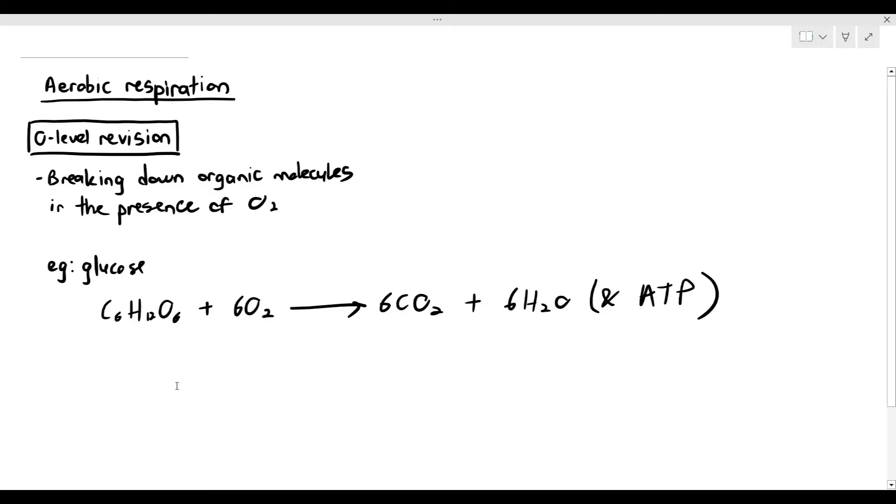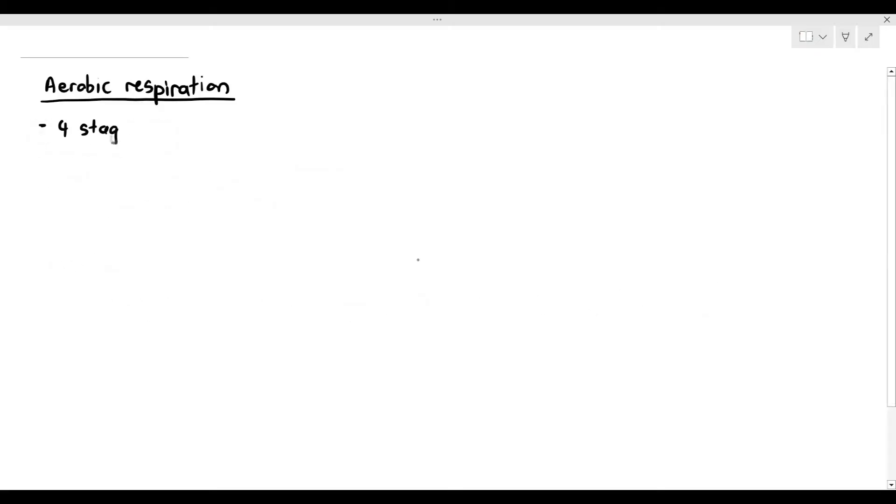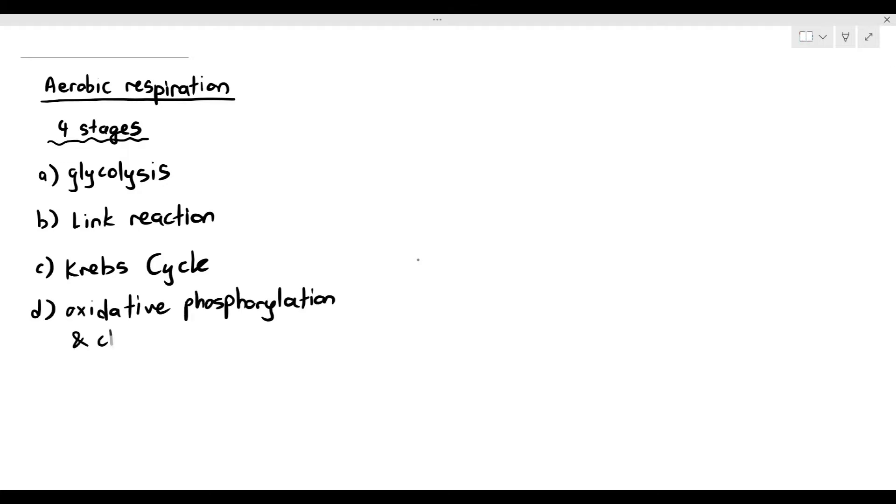But in A-levels, however, it's going to become painful. You have been warned. Aerobic respiration is divided into four big stages: glycolysis, link reaction, Krebs cycle, and oxidative phosphorylation and chemiosmosis. Oxidative phosphorylation and chemiosmosis are put together. Technically they are two separate processes, but we just lump it in as one.